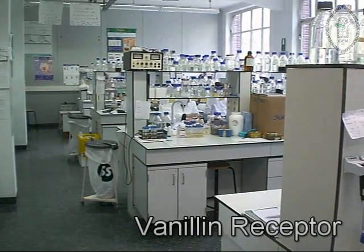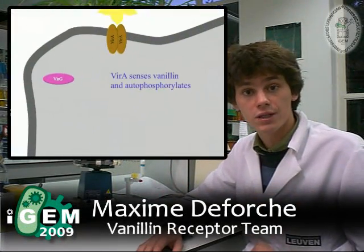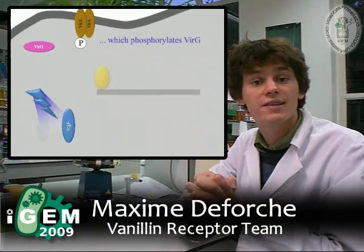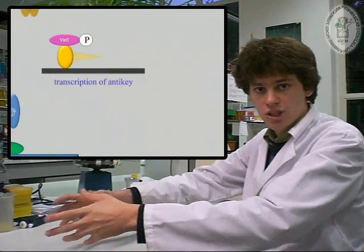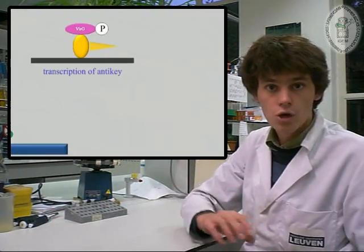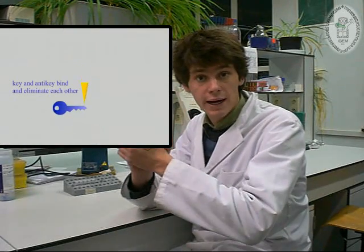And this is where the cell detects the vanillin too? Yes, through its vanillin receptor. The vanillin receptor consists of two parts: two VirA proteins, which will dimerize and autophosphorylate when they sense vanillin. VirA will phosphorylate VirG, so it will be activated. VirG will bind the VirB promoter region, so the anti-key can be unlocked and transcribed. The blue key and anti-key were specially designed and manufactured to fit together. When a blue key encounters an anti-key, they will bind and stop the blue key from reaching the vanillin production subsystem.